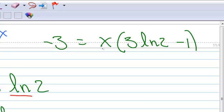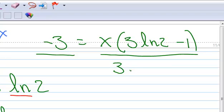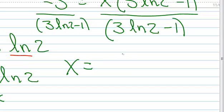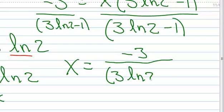So I'm solving for x. At this point I'm just going to divide both sides by this number — it's just a number: 3 times the ln of 2 minus 1. That's just some number in the calculator. We're going to hold all calculations to the end. So now I have x equals negative 3 divided by (3·ln(2) minus 1).